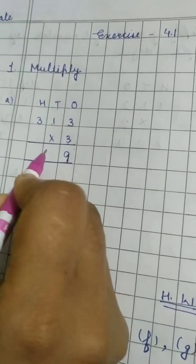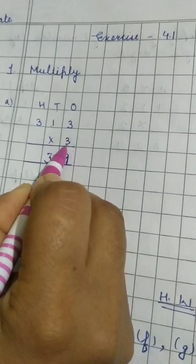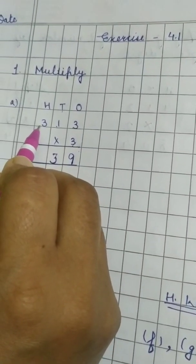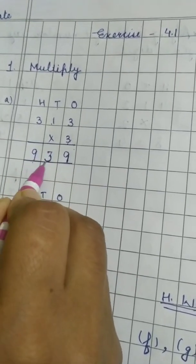3 1's are 3. Now the digit at 100's place. It is same 3 only. 3 3's are 9. So the answer is 939.